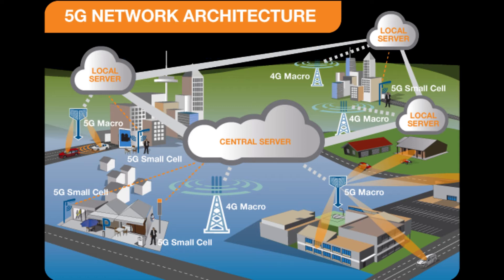The 5G network architecture illustrates 5G and 4G working together, with central and local servers providing faster content to users and low-latency applications. A mobile network has two main components: the radio network and the core network.